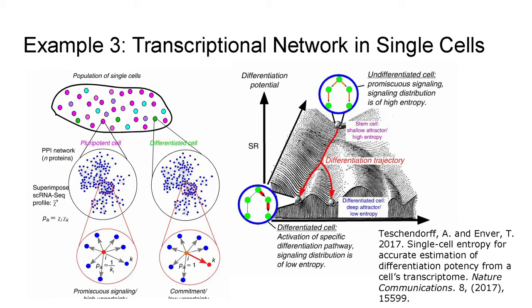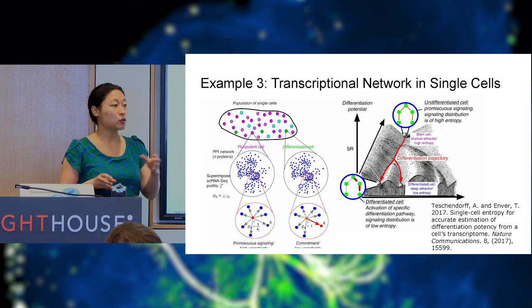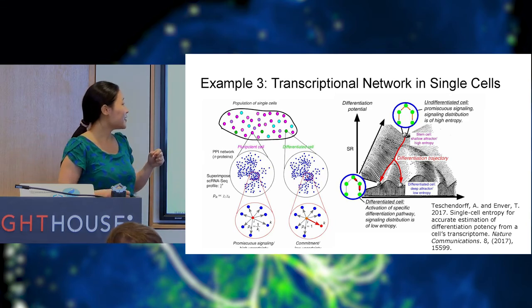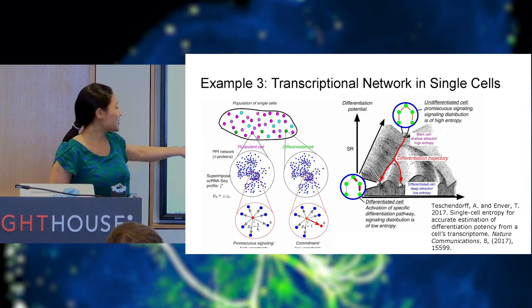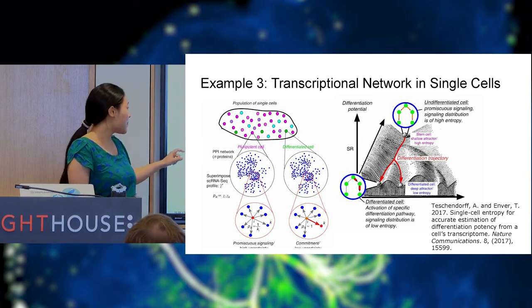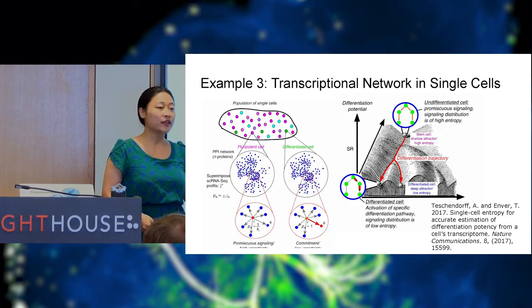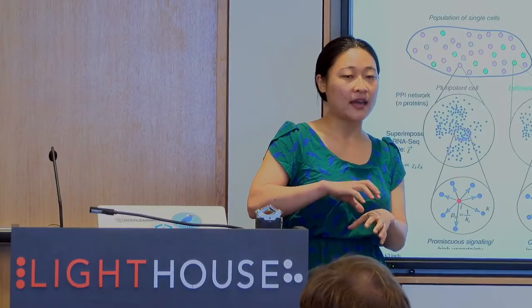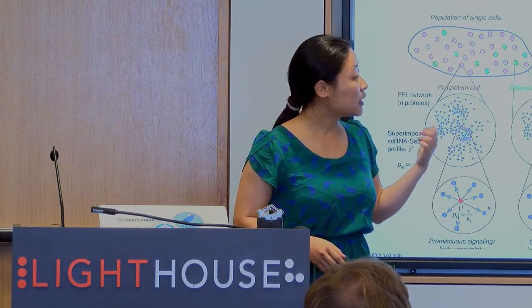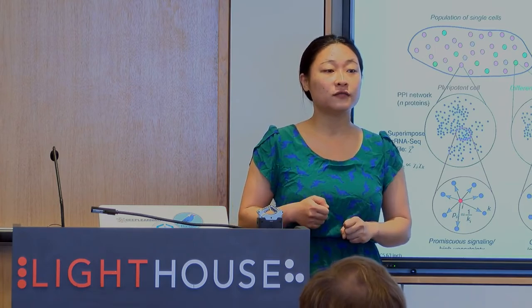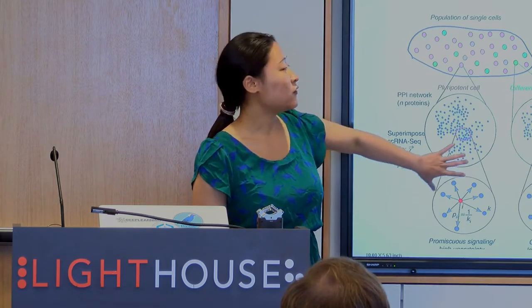The third slice we're going to take is instead of using the metabolic network, using the transcriptional network, which is basically how genes regulate each other. This particular paper is addressing the problem of development—how do cells start from homogeneous states and diverge into very different states, and how do we measure that potential of divergence? The way they did it, introducing back information theory as well, is they took the protein-protein interaction network and measured the strength of the edges from each protein to another. The assumption is that the more entropy there is in this network, the more potential it has to diverge into different states. They did this experimentally and actually found that they can predict the potential of differentiation just from measuring the entropy from this network perspective.